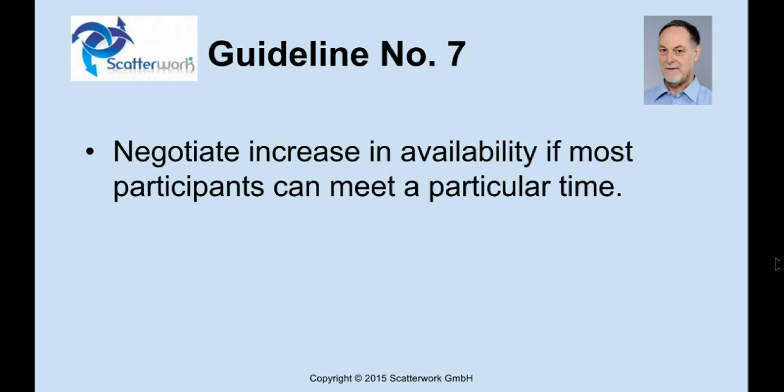Guideline number seven, already mentioned in passing, is that if we look at the feedback from this process and find most people are free for a particular time, we can go back and ask the other person if they are really not free at that given time. It might have been a preference rather than an absolute — for example, people don't like to work late at night, but obviously if they're on an airplane, they usually can't talk.